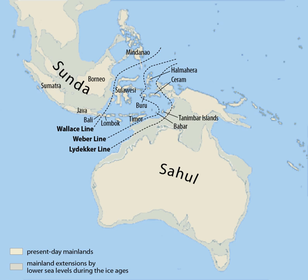Sundaland is a biogeographical region of southeastern Asia corresponding to a larger landmass that was exposed throughout the last 2.6 million years during periods when sea levels were lower. It includes the Malay Peninsula on the Asian mainland, as well as the large islands of Borneo, Java, and Sumatra and their surrounding islands.